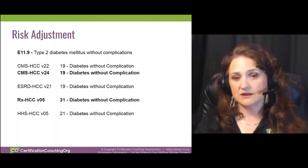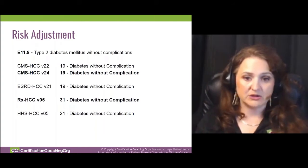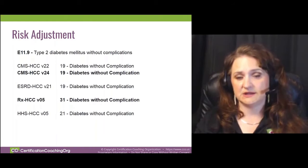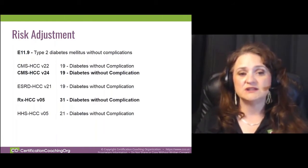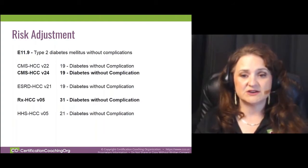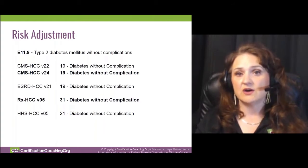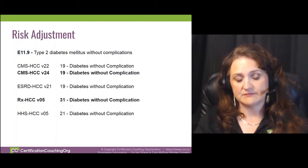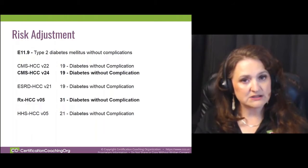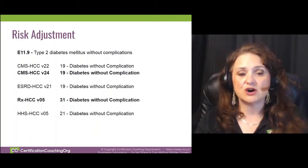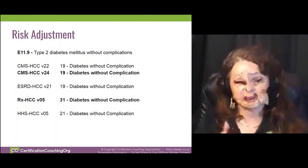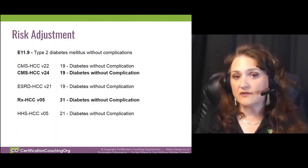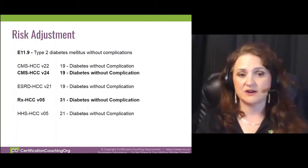I use Findacode as my encoder and they list everything that's applicable, including home health. If we look at diabetes type 2 without complications, it also has an HCC for end-stage renal disease. Risk adjustment also has an aspect for pharmacy — how much will it cost to treat a patient for the medications they'll be taking for their disease process? There are often conditions that carry an RX-HCC but will not carry a CMS-HCC.